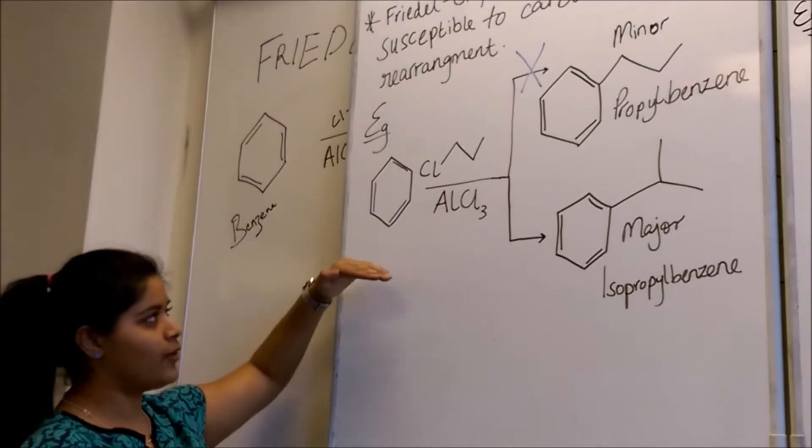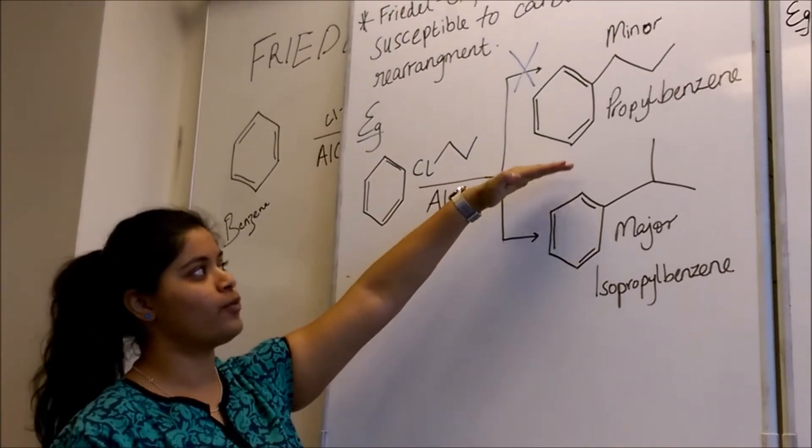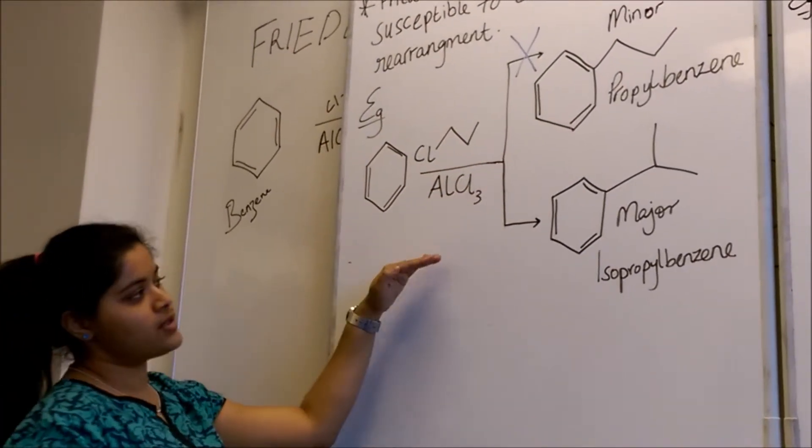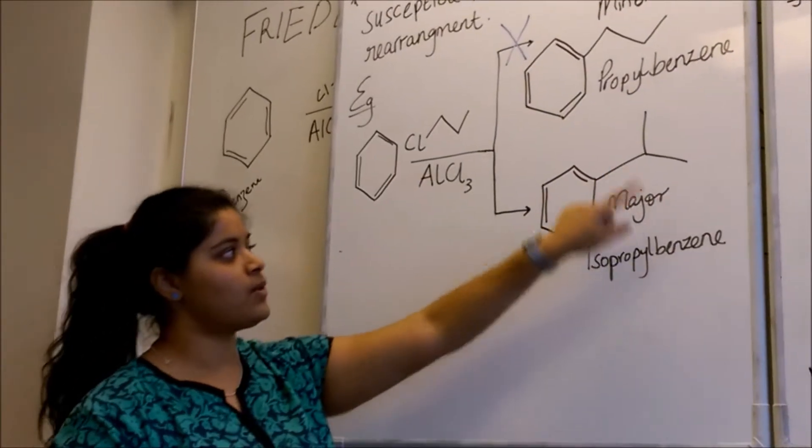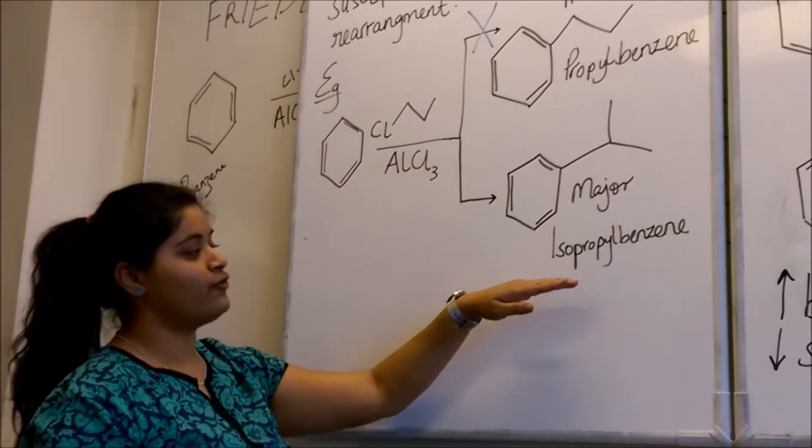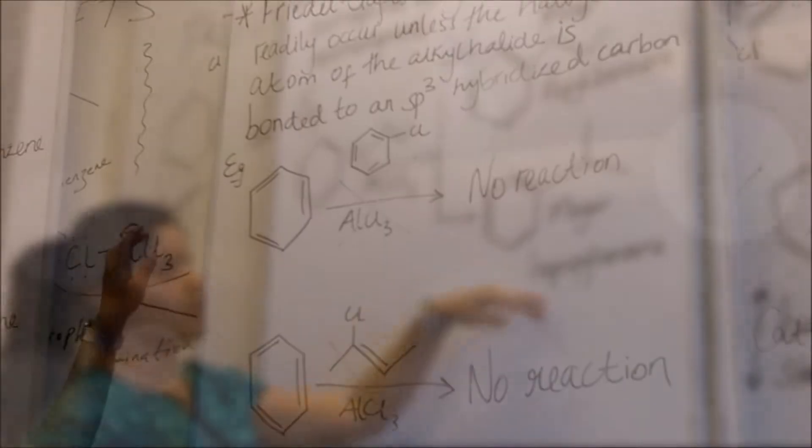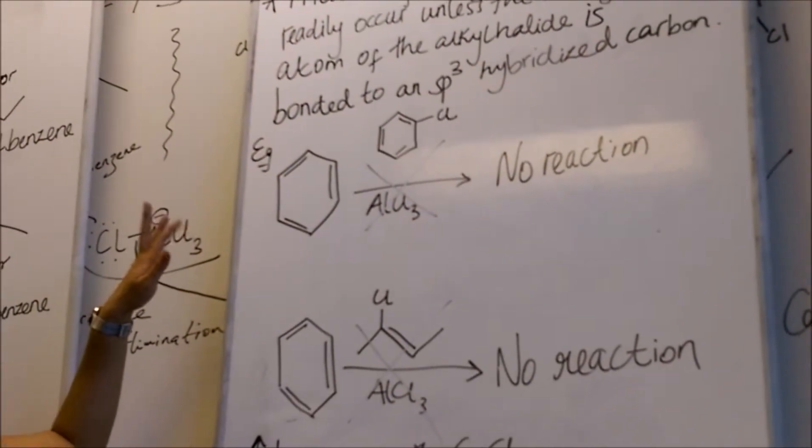in this reaction, if there was no carbocation rearrangement, we would form propyl benzene. But because there is carbocation rearrangement, we have a 1,2-hydride shift that forms isopropyl benzene.